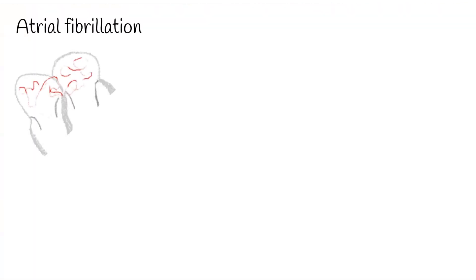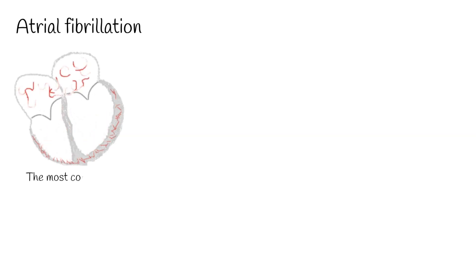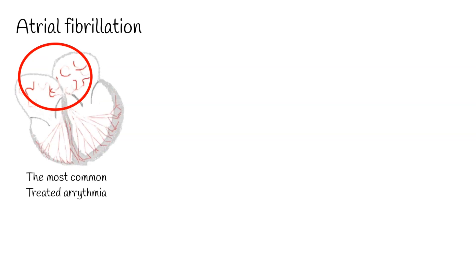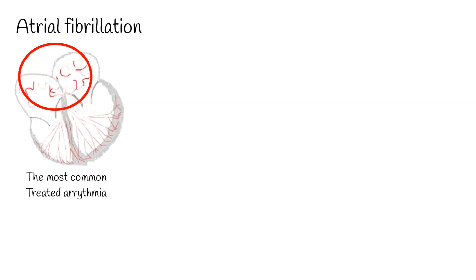Atrial fibrillation is the most common treated arrhythmia. It involves chaotic, irregular electrical signals in the upper chambers of the heart, called the atria, which causes a fast heartbeat. Some people who have atrial fibrillation don't know they have it and don't have any symptoms.